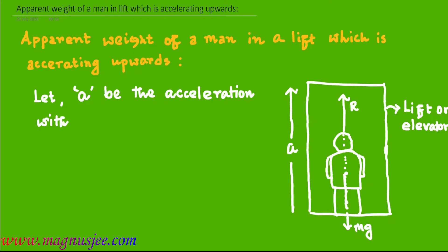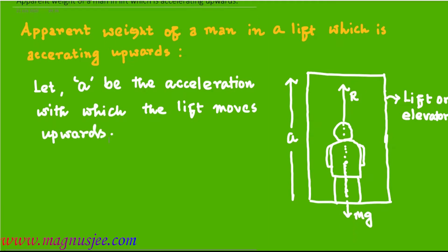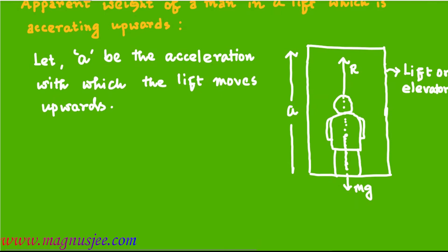Let A be the acceleration with which the lift moves upwards. Mg is the actual weight or true weight of a man standing inside the lift.